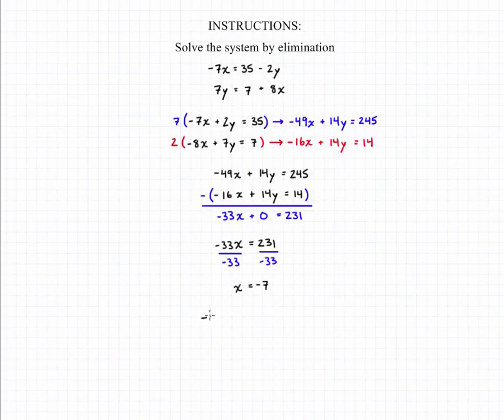And now that we know the value of x we can plug it back into one of the previous equations and use it to find y. So negative 7 times negative 7 plus 2y is going to equal 35.